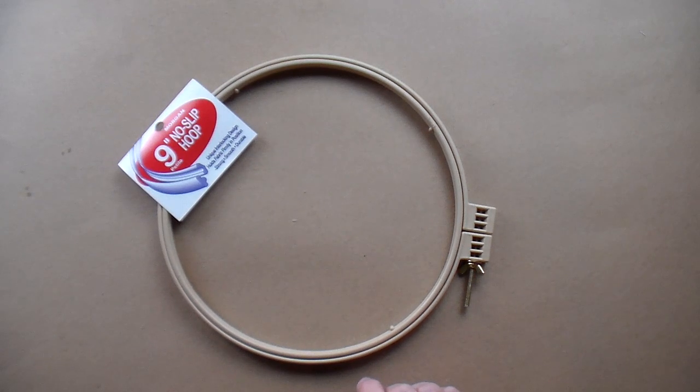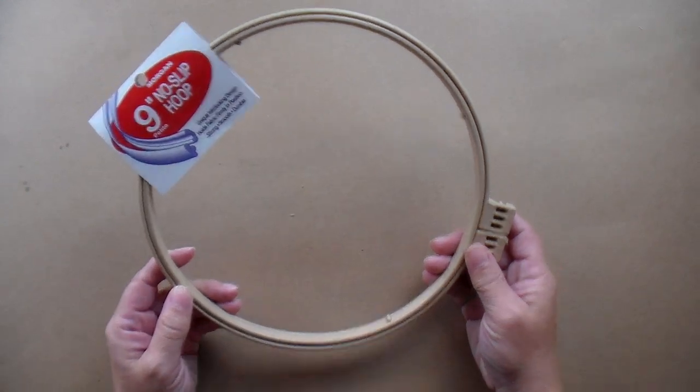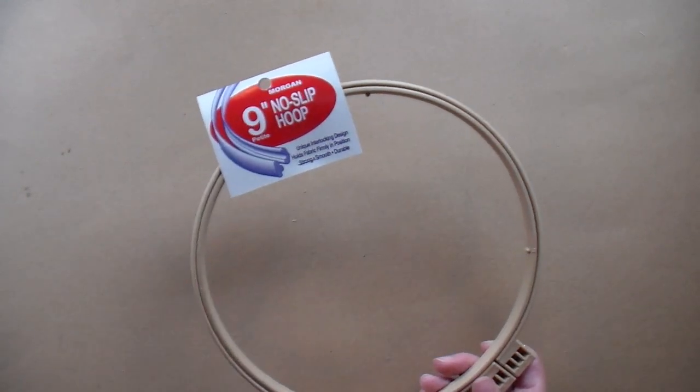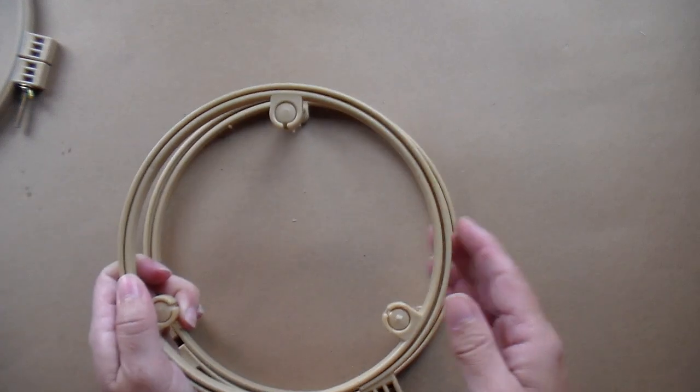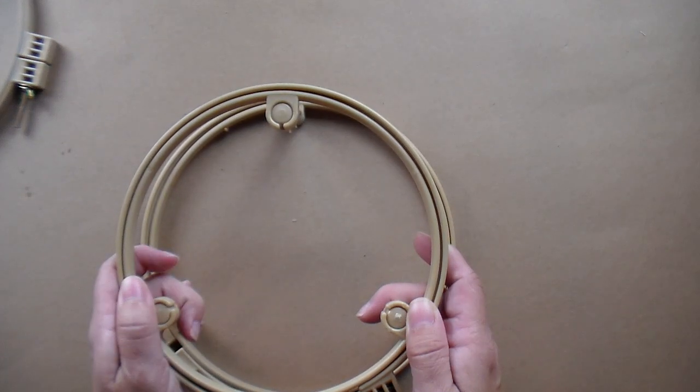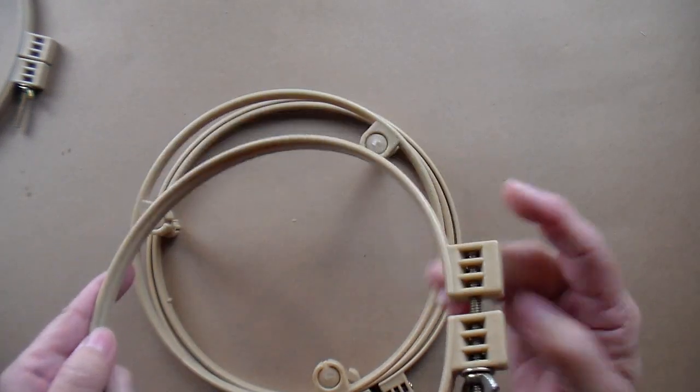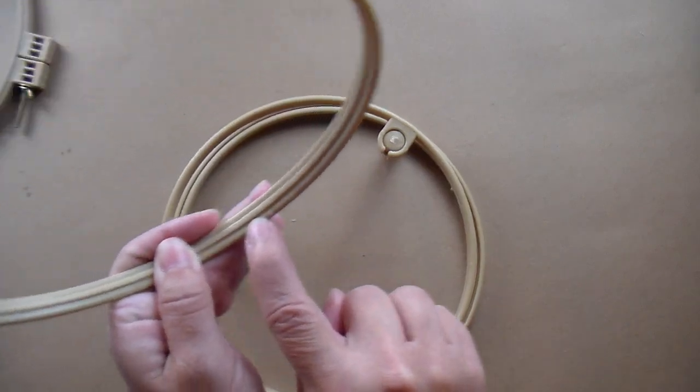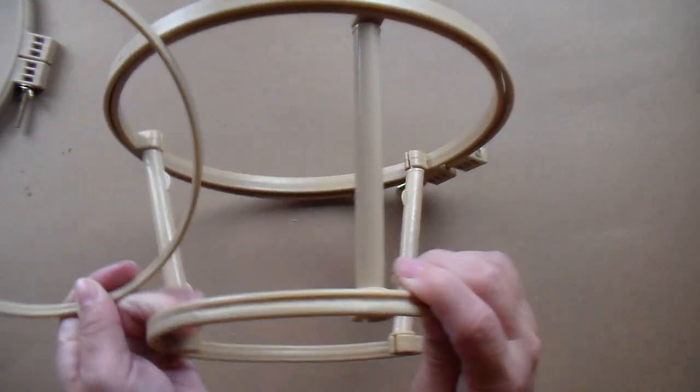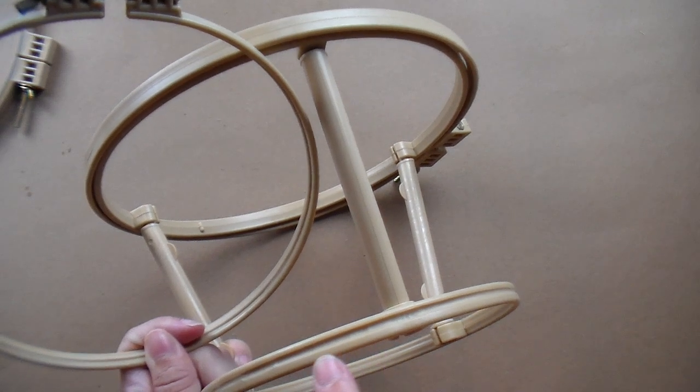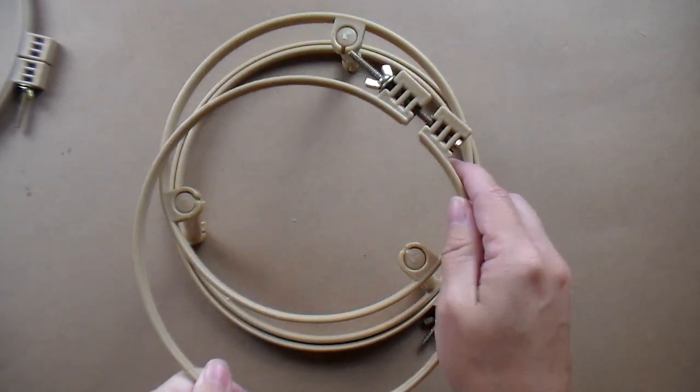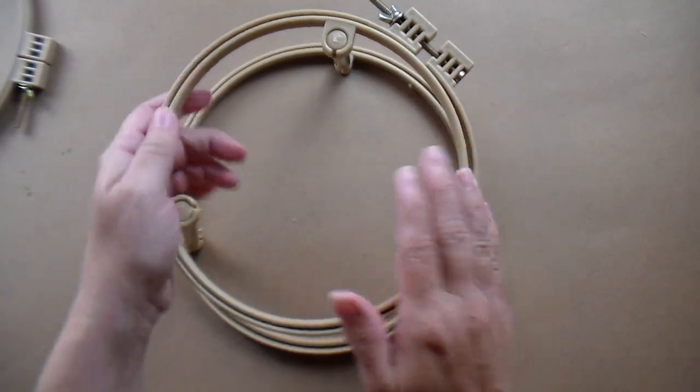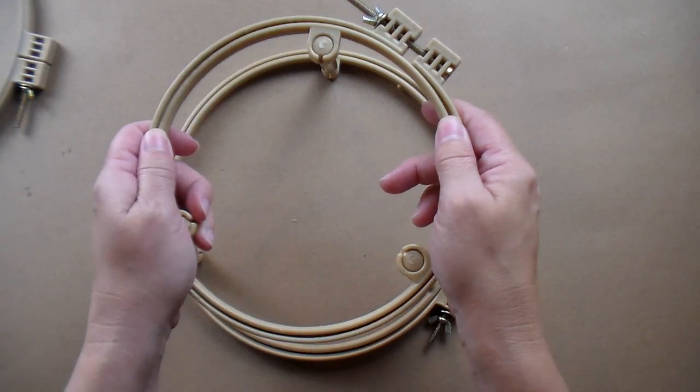You're also going to need a way to hold the weaver's cloth tight while you are punching. You can do this with a Morgan no slip hoop or a Morgan no slip lap stand. Both of these have a lip all the way around one part of the hoop and the other inner part has a groove. And the two pieces fit together and help keep the fabric from slipping as you're punching.